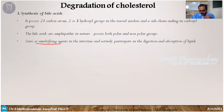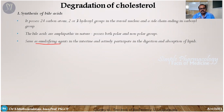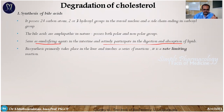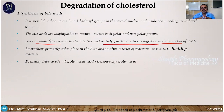Bile acids serve as emulsifying agents. The liver produces bile acids, which are released into the small intestine where they emulsify lipids like cholesterol. They actively participate in the digestion and absorption of lipids. This is also a rate-limiting reaction — synthesis occurs when needed and shuts down otherwise. The major primary bile acids are produced here.